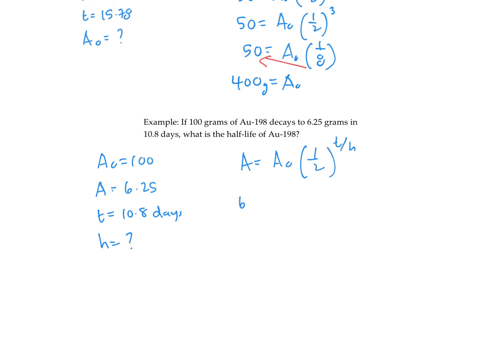So final amount is 6.25. Initial amount is 100. 10.8 is time passed. And we're looking for h. So we can't multiply the 100 by the half. Because the half has an exponent attached to it. So I'm going to divide by 100. If I can reduce to a fraction, I will. Or I could use a decimal. It doesn't really matter which. But 6.25 divided by 100 is 1 over 16.